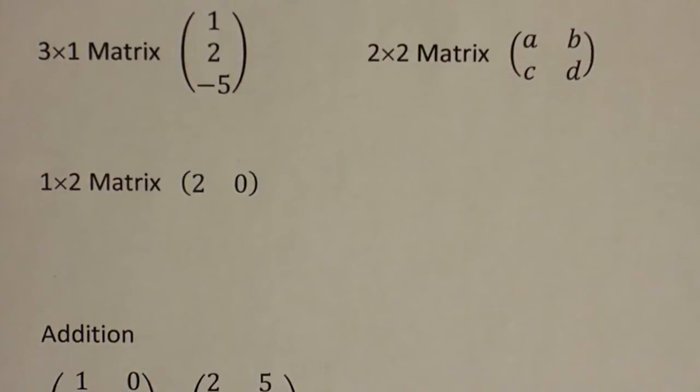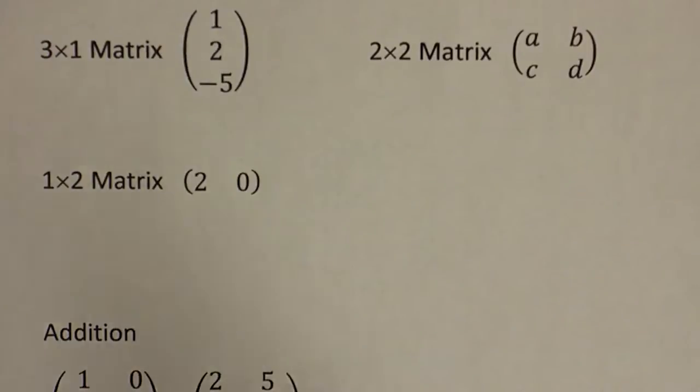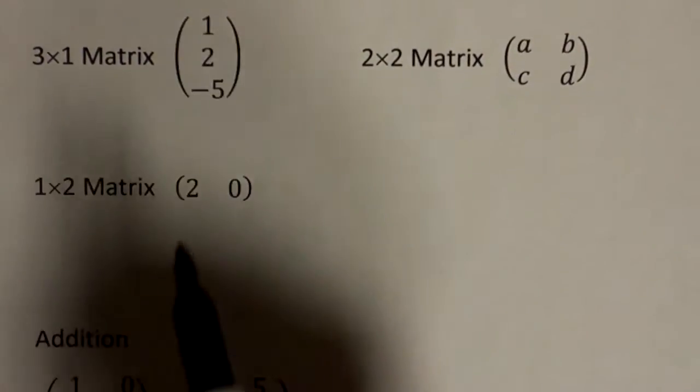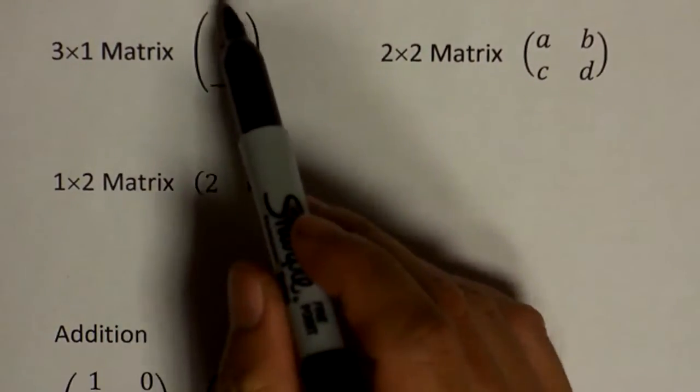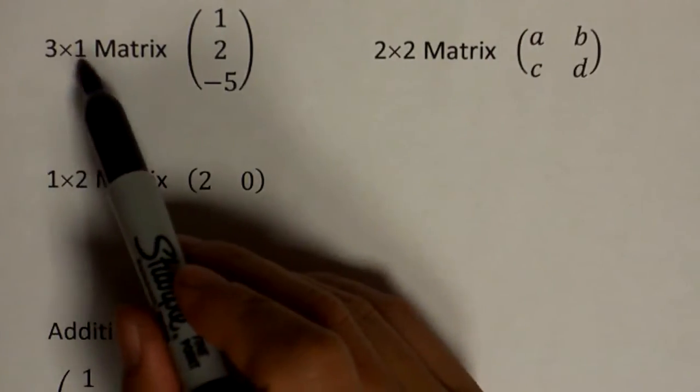A matrix is just a table of numbers, and like tables, you have rows and columns. Here we have a matrix with one, two, three rows and a single column, so it's called a three by one matrix.